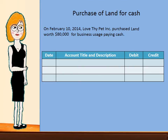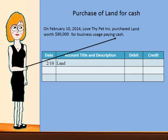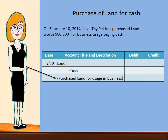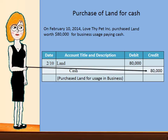We will start with the purchase of land for cash. On February 10, 2014, therefore we will put 2-10 in the date column. We purchased land. Land is an asset, so we will debit land to increase it. And how did we pay for it? Cash. So we will credit cash, which is also an asset, but we will decrease that account by crediting it. Our description will be 'purchase land for usage and building.' The amount will be $80,000. We will debit land, indicating that we are increasing the land account, and we will credit cash, indicating that we are decreasing the asset account cash.